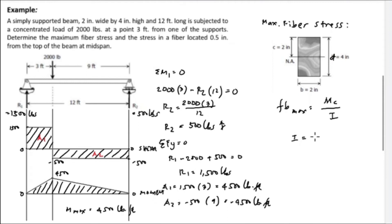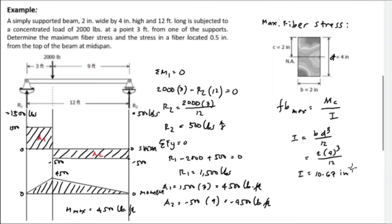The formula for maximum fiber stress is F_b = MC/I. For a rectangular cross-section, the moment of inertia I equals BD³ over 12. Substituting: I equals 2 times 4³ divided by 12, which is 2 times 64 divided by 12, giving I equal to 10.67 inches to the fourth power.